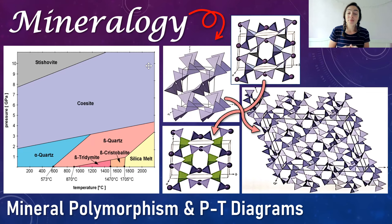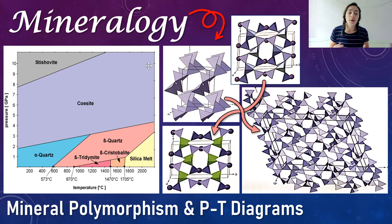Today we're going to be talking about mineral polymorphism and PT diagrams. PT diagrams and polymorphism might sound like terms that are a little intimidating, but don't worry — they're not that complicated. Polymorphism is just an important concept in mineralogy so we know that minerals have different structural varieties, which may not have different compositions but have different structures. These polymorphs are stable under different pressure-temperature conditions, and that's why we look at them on PT diagrams, just like the one shown here to the left.